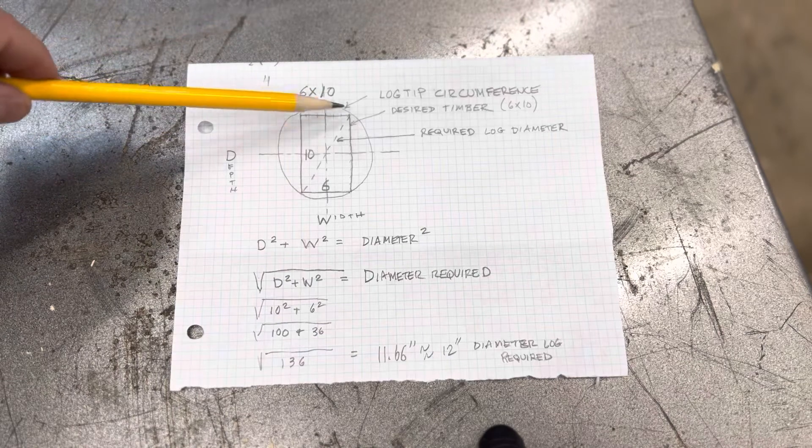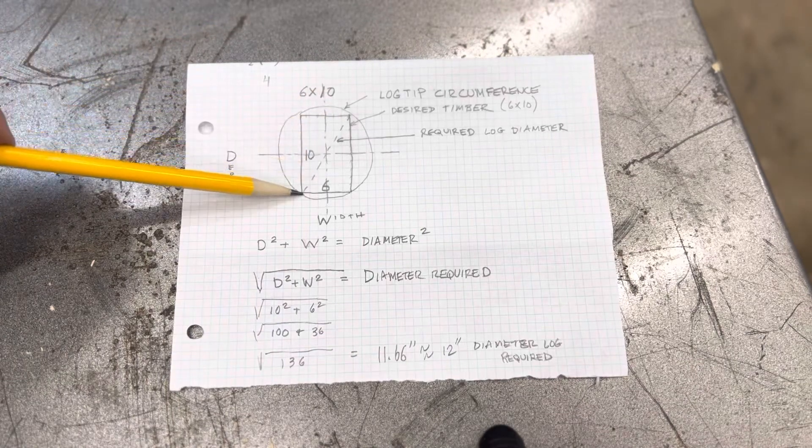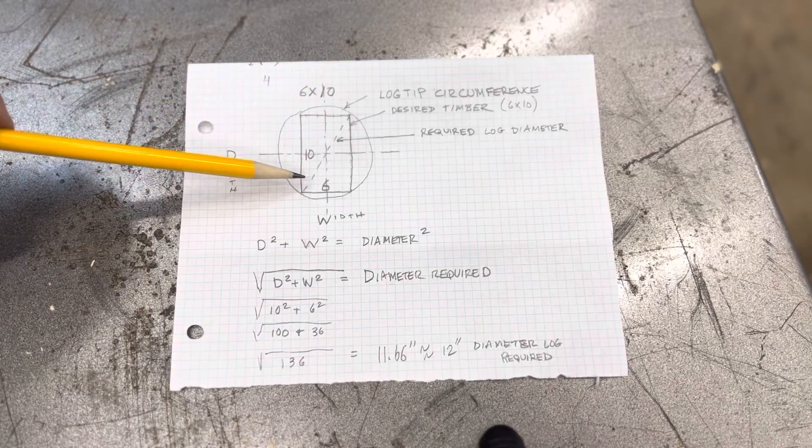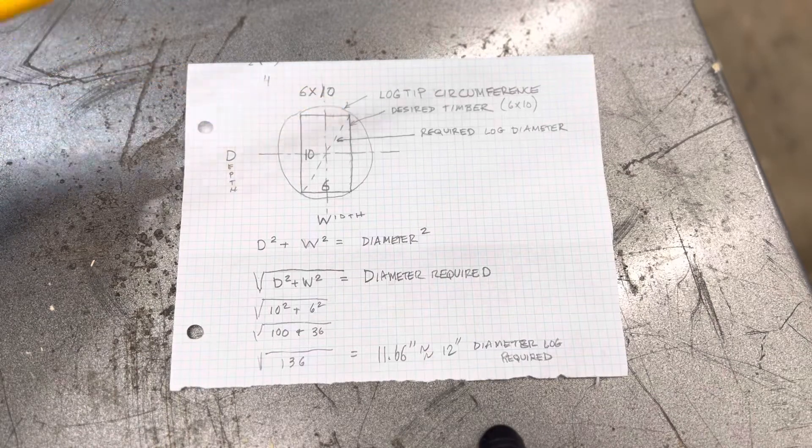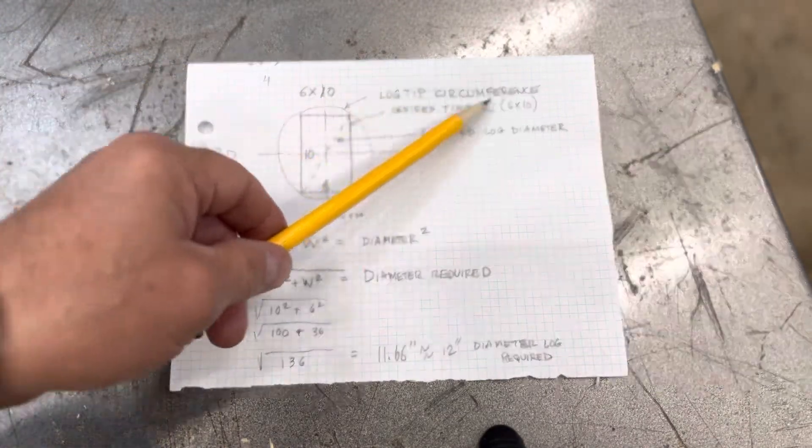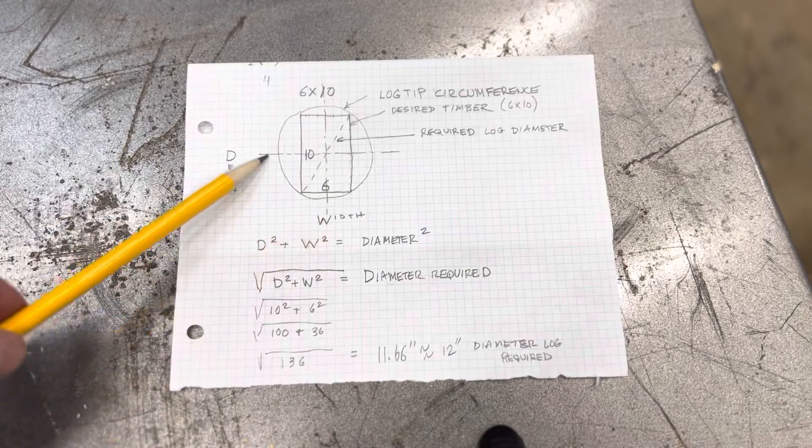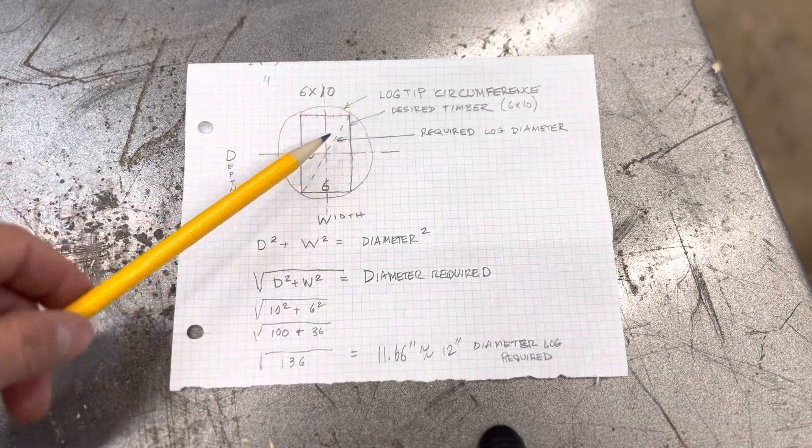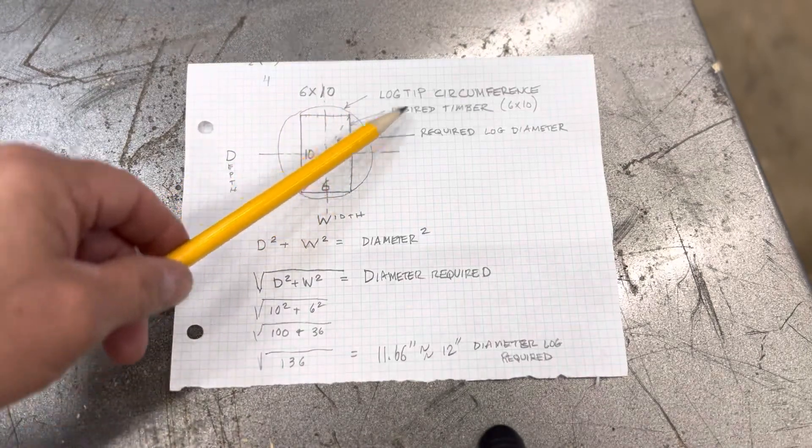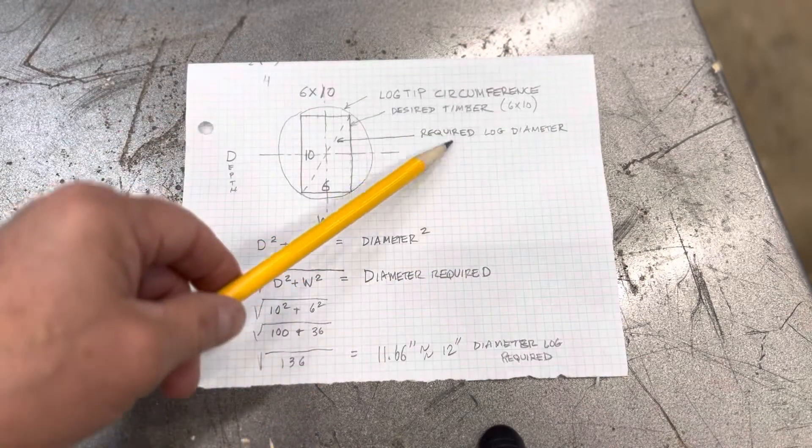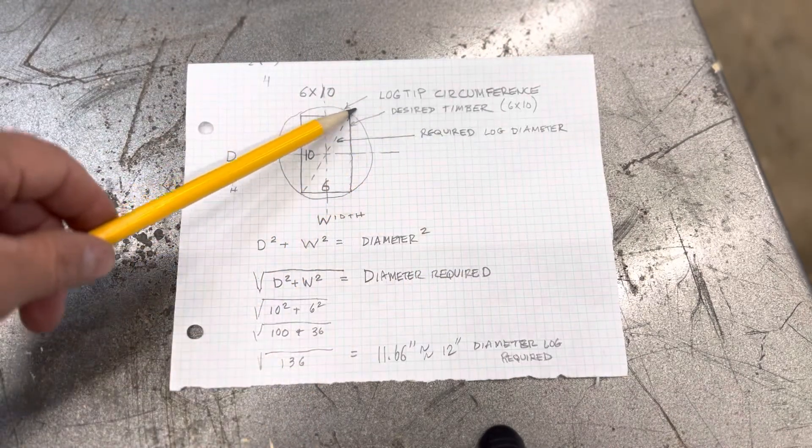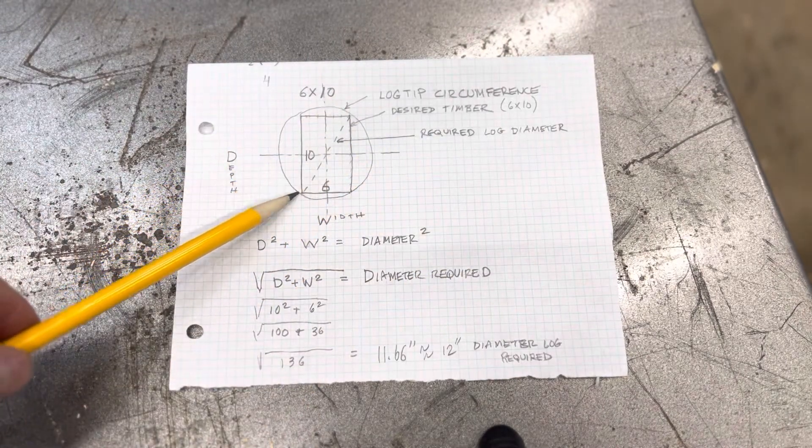What we're really looking for is this diagonal line of the timber to make sure it spans across the tip size of the log. So tip log circumference, that's what this is here, that's how big a round log is. This is the desired timber drawn in here, 6 by 10. And this is what we're really looking for, is this required diameter log.